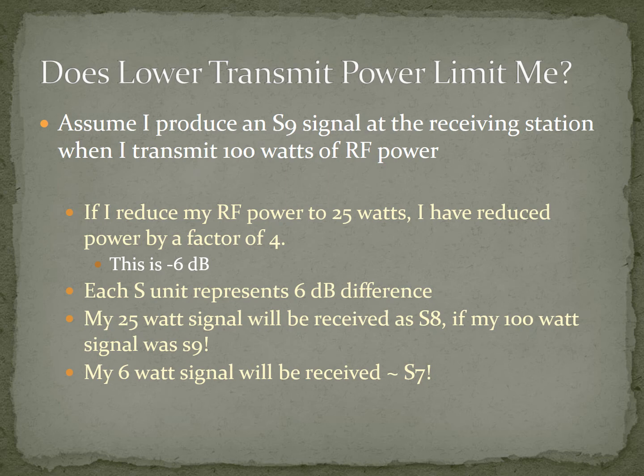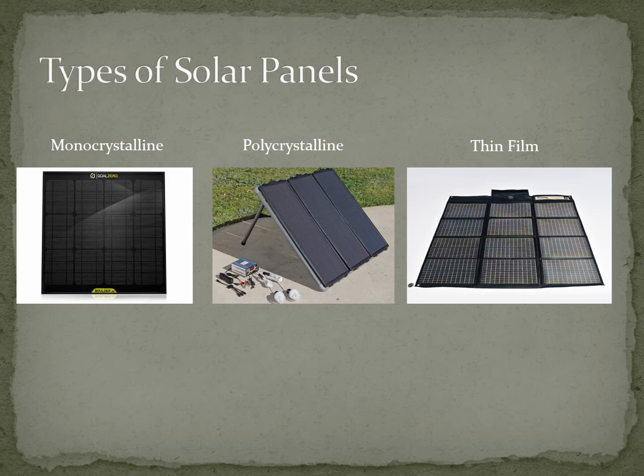Now let's talk about solar panels and how to charge these batteries. There are really three types: monocrystalline solar panels — like those Goal Zero sells — which are fairly expensive, solid, and rigid; polycrystalline panels, which are probably the least expensive but bigger and heavier, fine for a fixed location; and thin film panels, which are foldable and rollable. My panels came from a company called Powerfilm Solar, which I found at Dayton a couple of years ago.